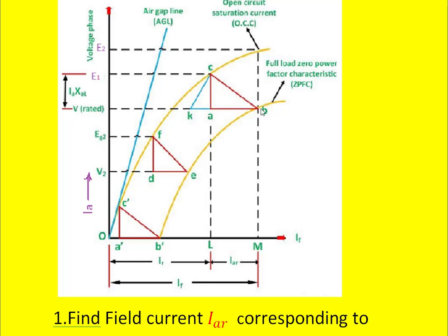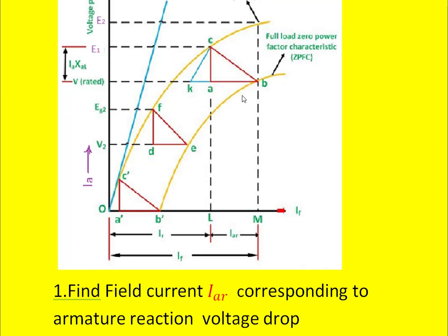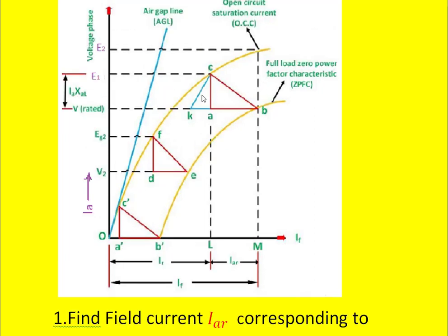Now draw a parallel line from point B to the x-axis such that that line is equal to OB dash — here it is equal to KB. Then from K draw a parallel line to the air gap line such that it will cut the OCC at point C. From point C draw a parallel line to the y-axis such that it will cut the line KB at point A.